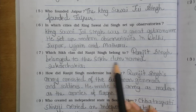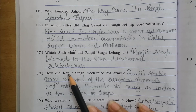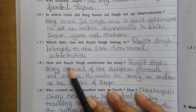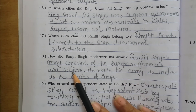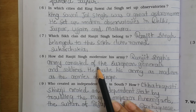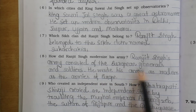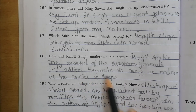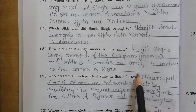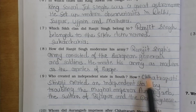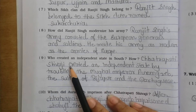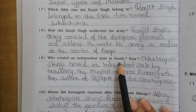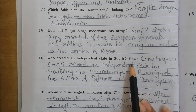Which Sikh clan did Ranjit Singh belong to? Ranjit Singh belonged to the Sikh clan named Sukerchakia. How did Ranjit Singh modernize his army? Ranjit Singh's army consisted of European generals and soldiers. He made his army as modern as the armies of Europe. Who created an independent state in the south?